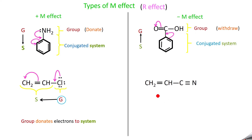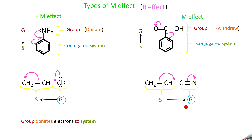Take one more example for minus M effect. Here the conjugated system and the withdrawing group are identified. Shifting the electrons toward the group shows that the group withdraws electrons from the system — there is a migration of electrons from the system to the group. This comes under minus M effect. So you have two types: plus M effect and minus M effect.